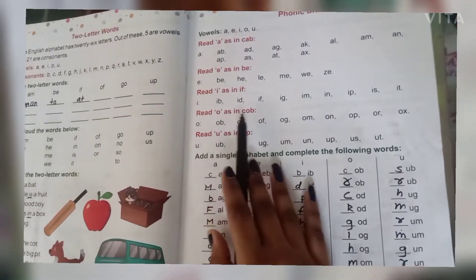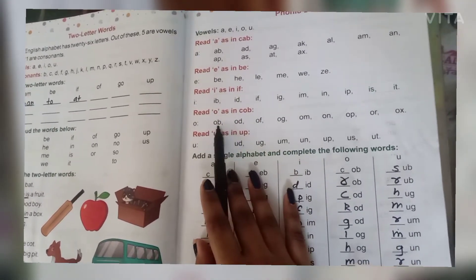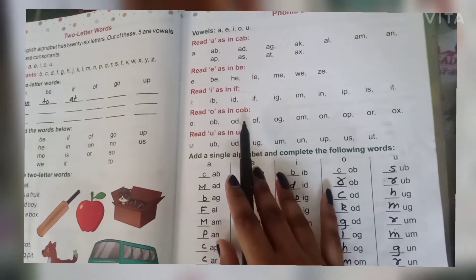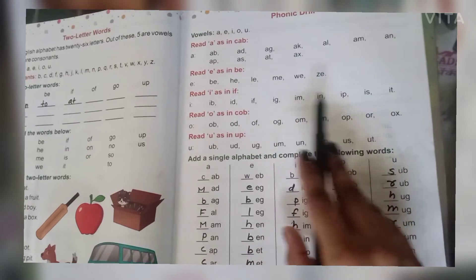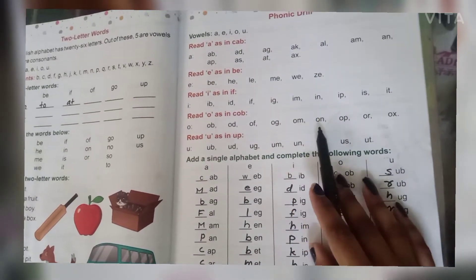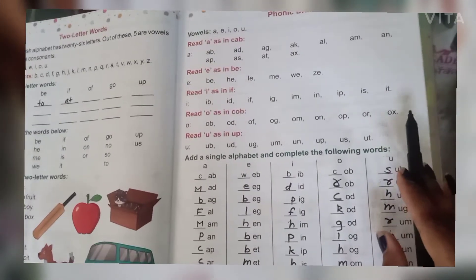Read O as in cob. Ob. You have to read with the sound ob. O-B, ob. O-D, od. O-F, off. O-G, og. O-M, om. O-N, on. O-P, op. O-R, or. O-X, ox.